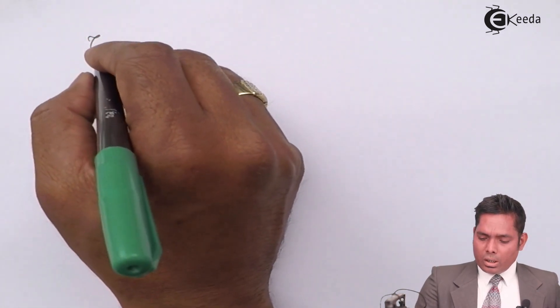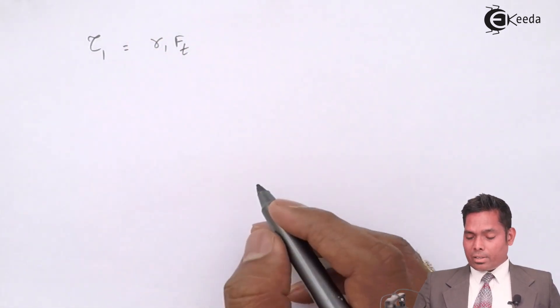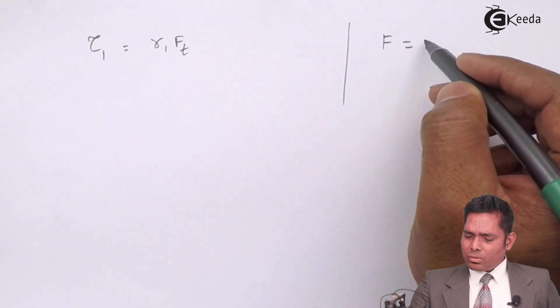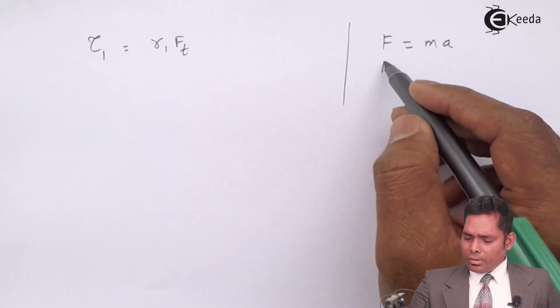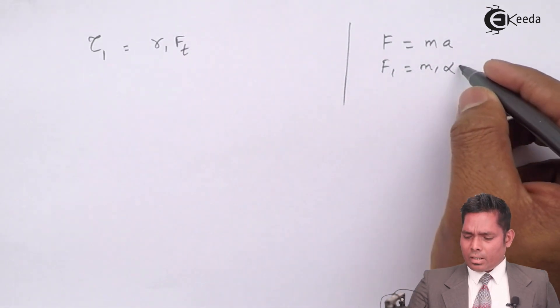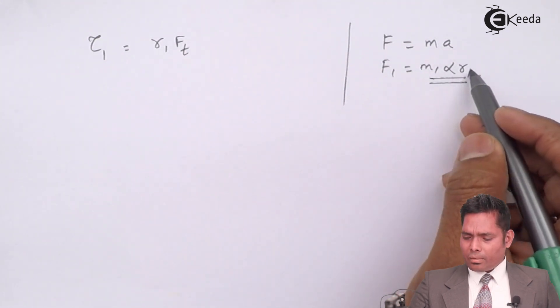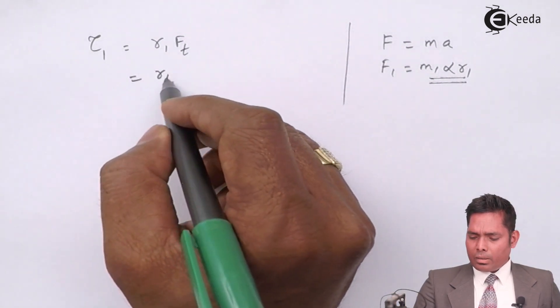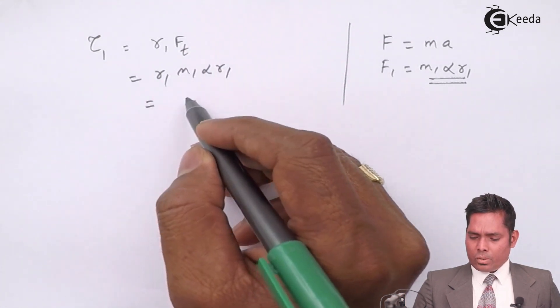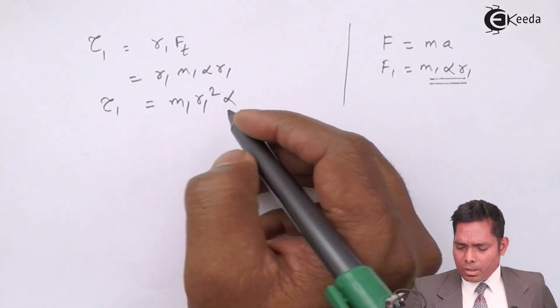Now torque due to first particle, I will write here as r is r1 and force is tangential force acting. What is that tangential force? We know that the force is mass into acceleration. For the first particle, the mass is m1, acceleration is alpha r, tangential acceleration alpha r1. Because alpha is constant for all particles, so only r1 I will write here. So this will become r1 and ft will become m1 alpha r1, which is equal to m1 r1 square alpha. So this torque part tau 1 comes out to be m1 r1 square alpha.